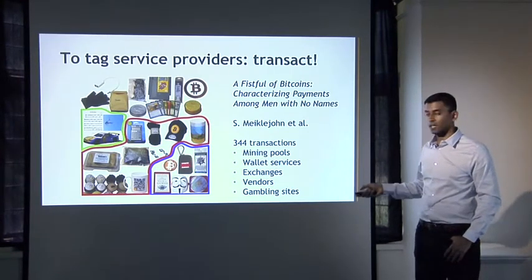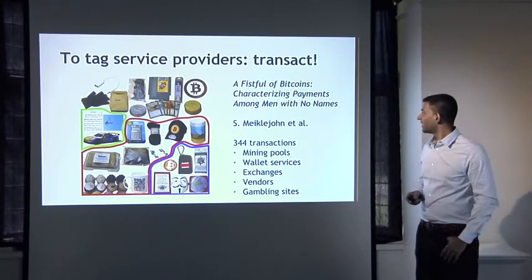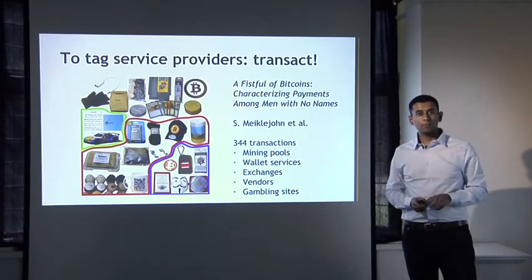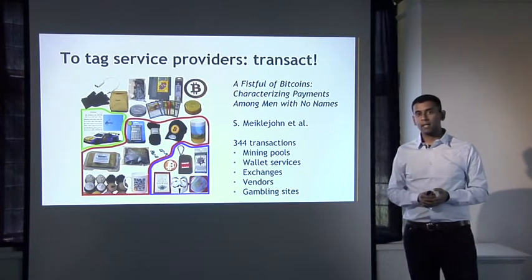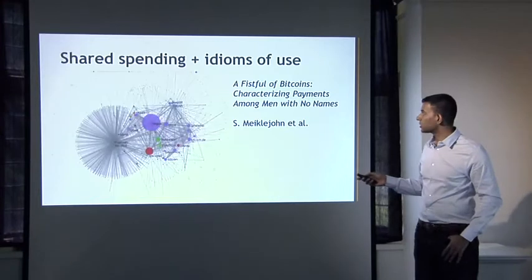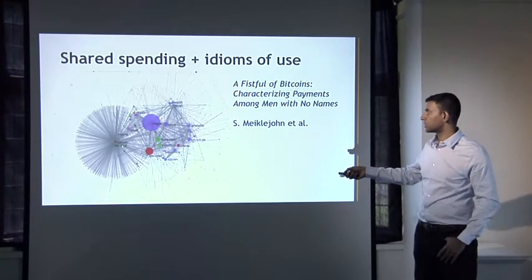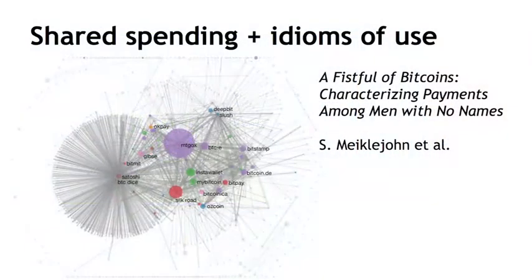They got some cool things to show for their efforts — and Meiklejohn informs me that in fact the cupcakes were really good. The authors used this very clever technique to label the major clusters in the graph. In fact, this was Mt. Gox as we might have guessed, and this was Satoshi Dice, but a lot of the others would have been very difficult to guess. By actually transacting with these services, they were able to identify most of the service providers.